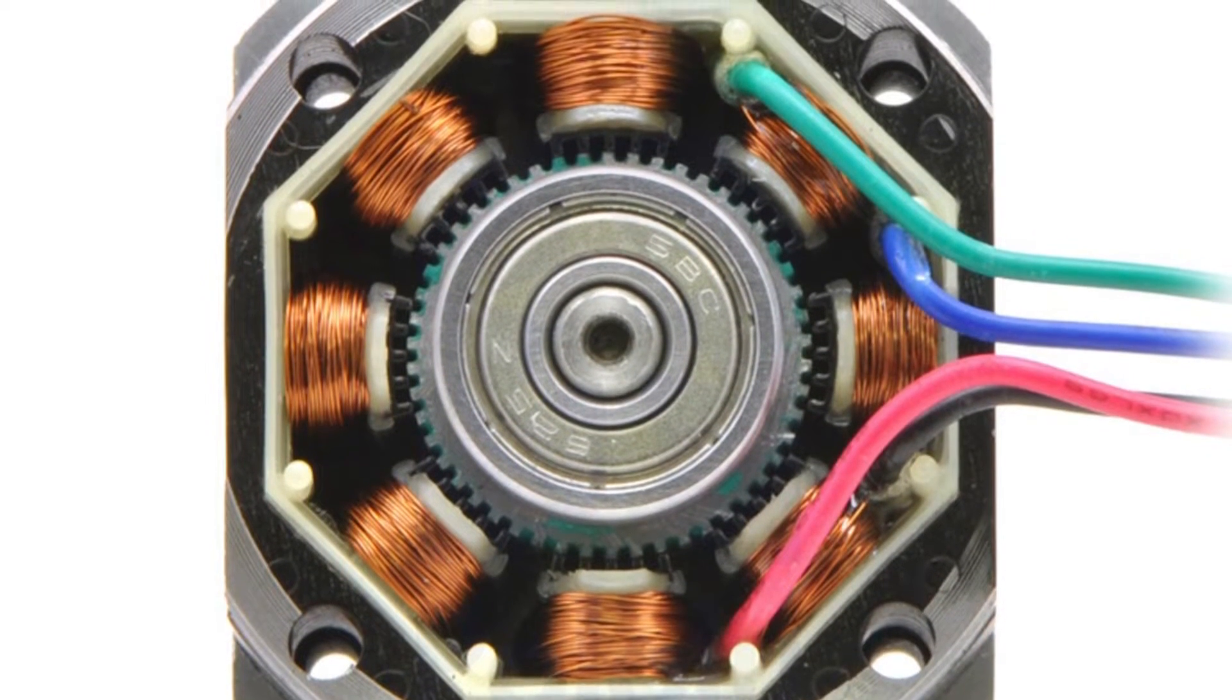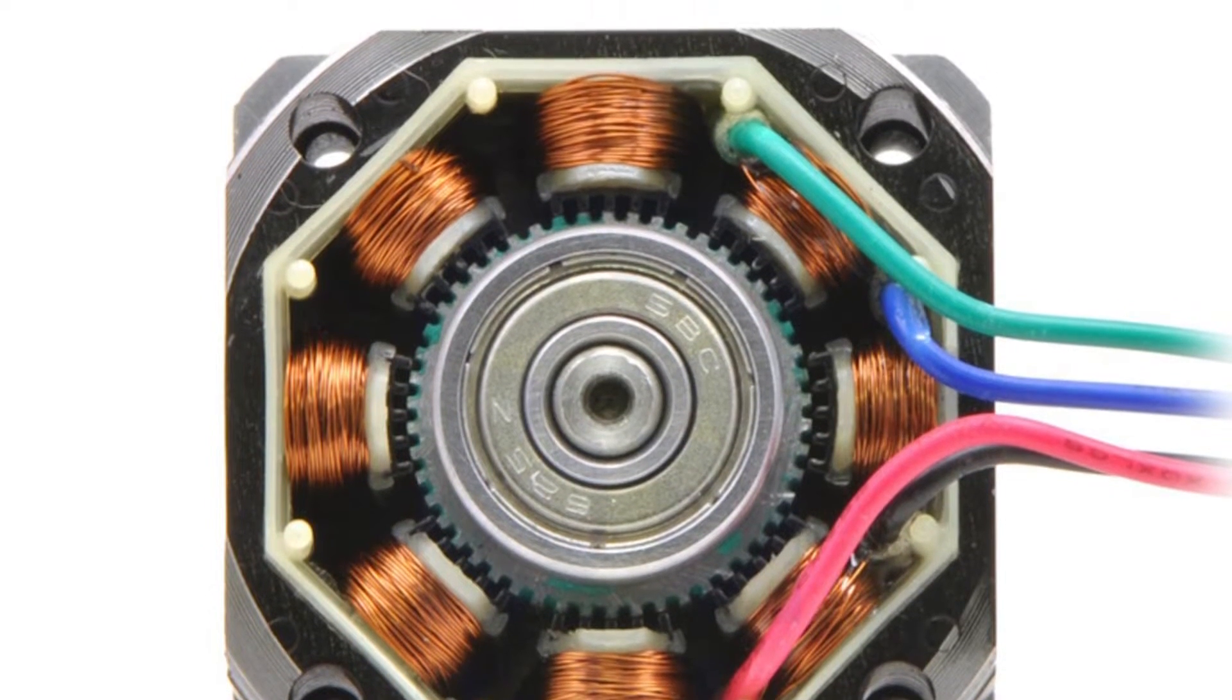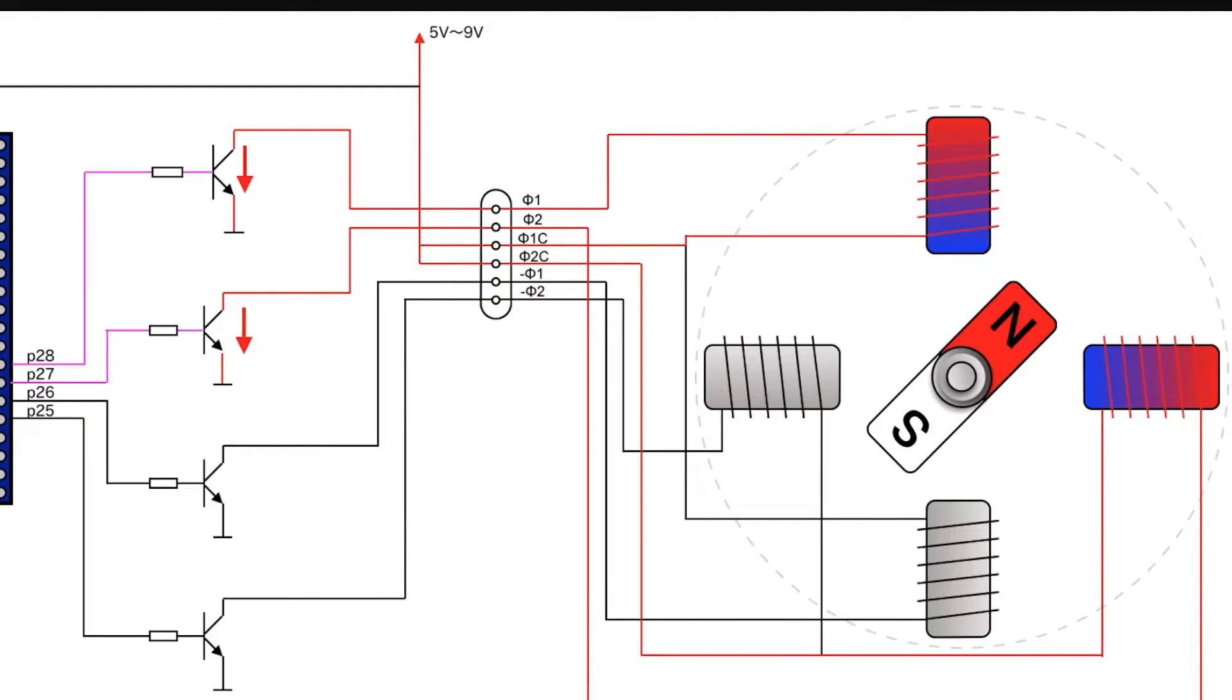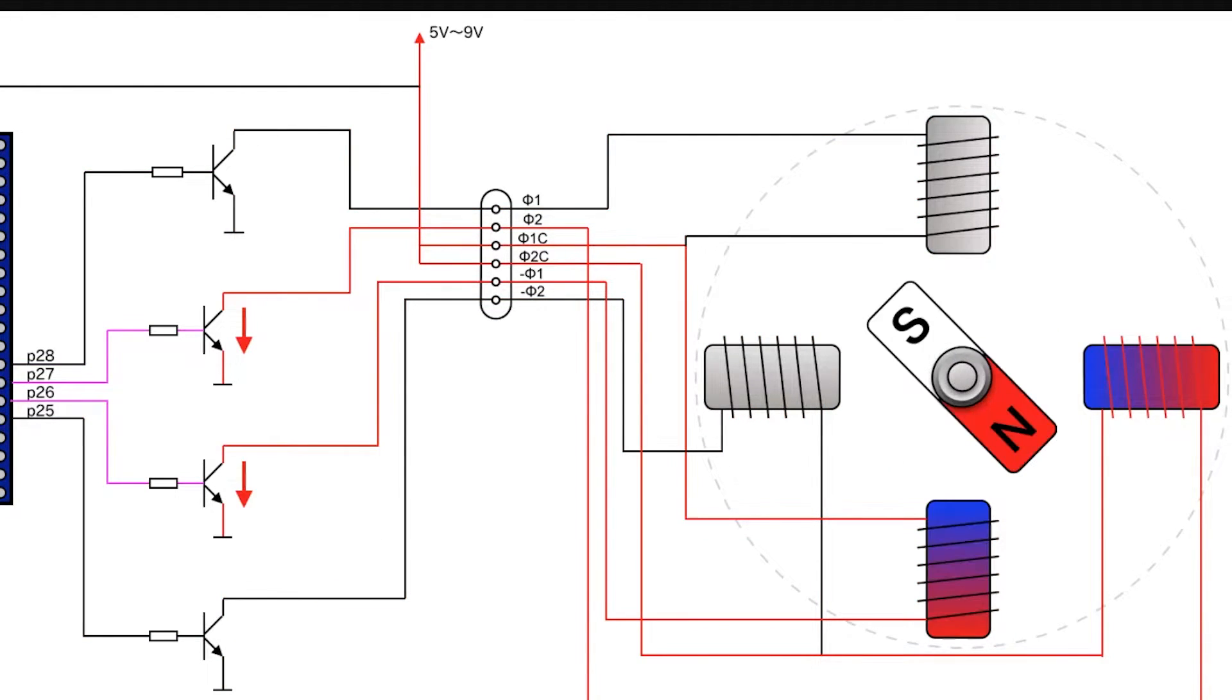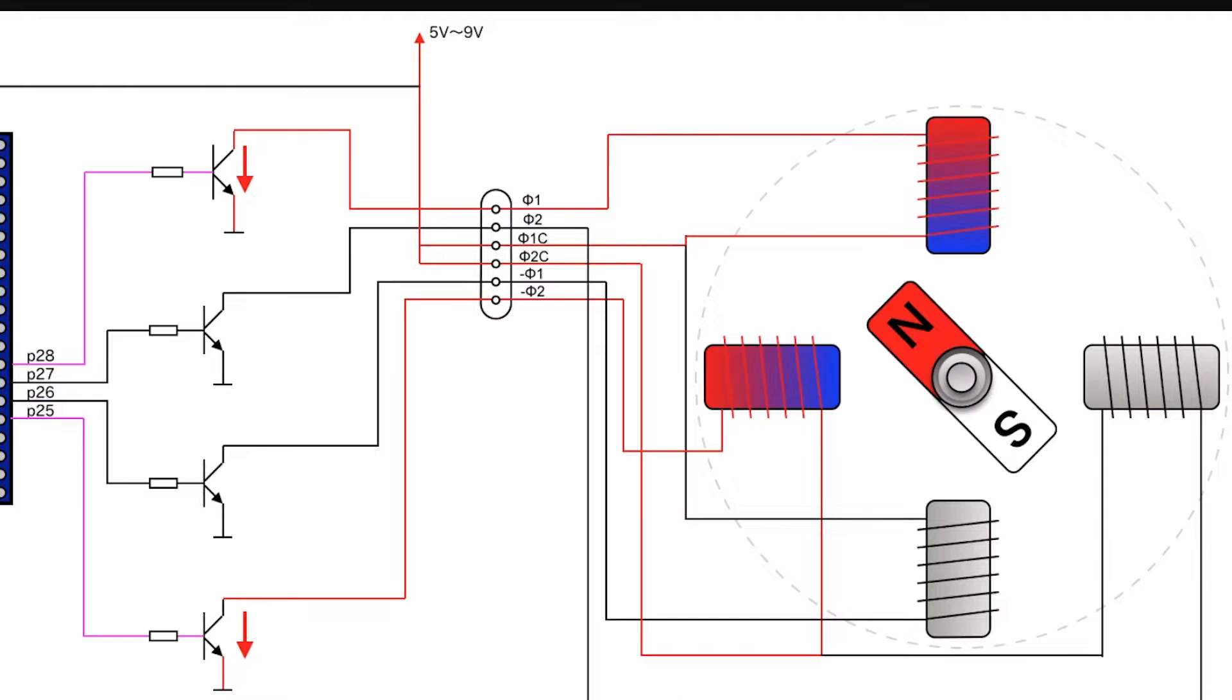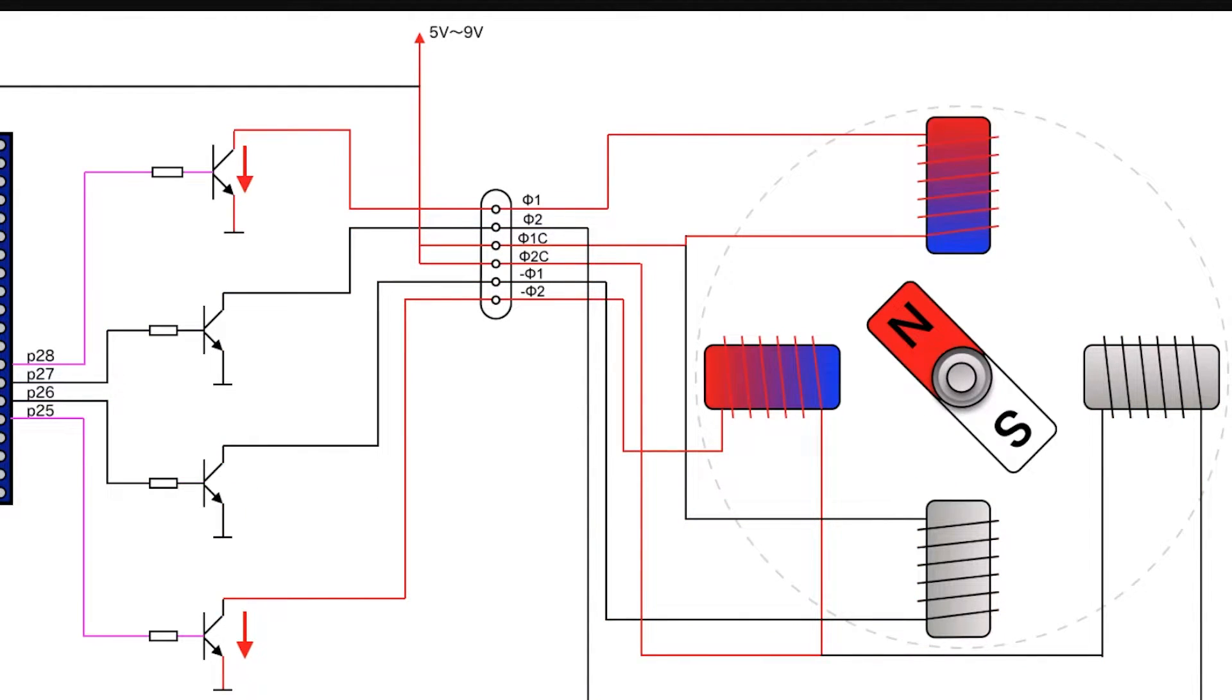As you can see here, the windings of the stator are segmented and can be excited individually. As we excite different coils of the stator in a particular pattern, the interaction between the magnetic field of the rotor and the magnetic field of the stator will cause the rotation of the rotor in a particular direction in a step-by-step manner.